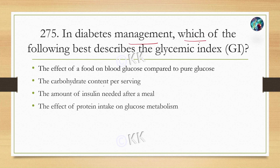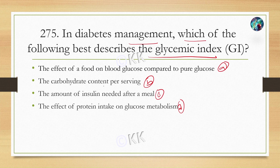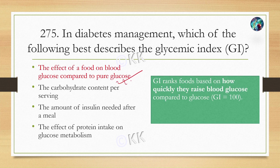In diabetes management, which of the following best describes the glycemic index? Glycemic index के बारे में पहले भी discuss किया था — यह medical nutrition management part understanding nutrition और advanced nutrition से correlate करता है। Option A: the effect of a food on blood glucose compared to pure glucose. Option B: the carbohydrate content per serving. Option C: the amount of insulin needed after meal. Option D: the effect of protein intake on glucose metabolism. Correct option है Option A.